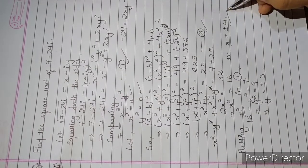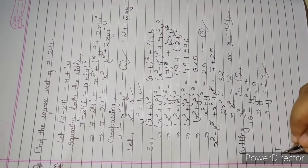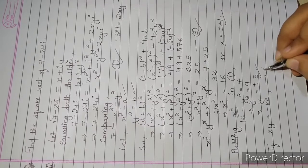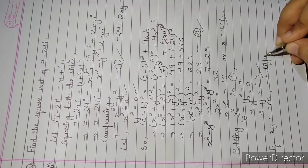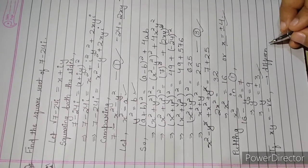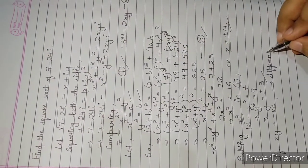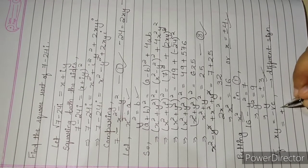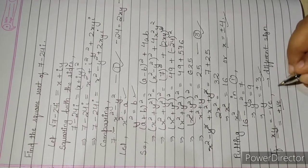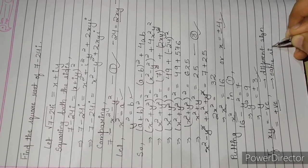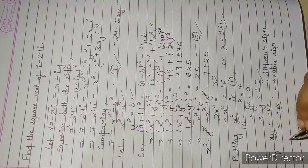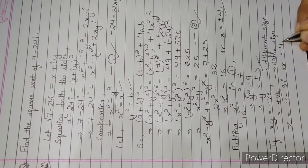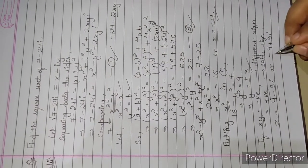We have the values of x and y. One thing to note: if x times y is negative, they will have different signs. Since our product 2xy equals minus 24 is negative, x and y must have different signs. Therefore, z equals 4 minus 3i or minus 4 plus 3i — this is the answer.